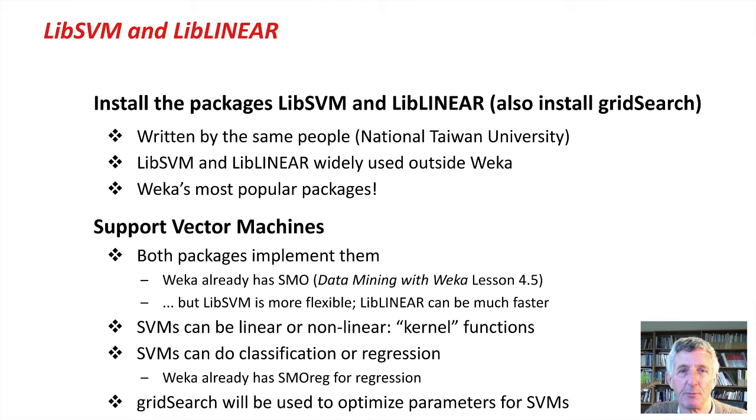Both of these packages are to do with support vector machines. Weka already has the SMO implementation for support vector machines that we've seen before in the first course, but lib-svm is more flexible and lib-linear can be much faster. It's important to know that SVMs can be either linear or non-linear through a kernel function, mentioned very briefly in Lesson 4.5 of that earlier course. Also, they can do classification or regression, which we haven't mentioned. Weka contains SMOreg for regression, the same algorithm. We're going to use the grid-search methods to optimize parameters for SVMs, which is quite important.